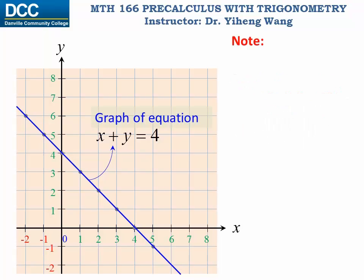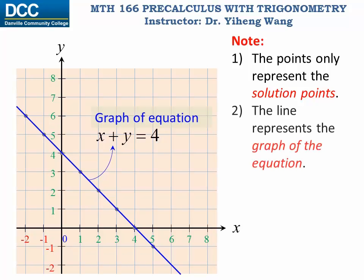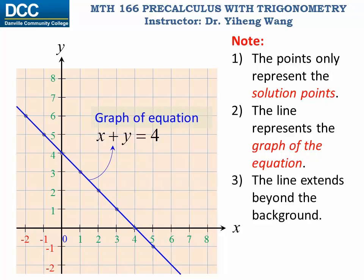You might find this very simple, but still there are several notes I must stress. The points that we first plotted only represent a couple of specific solution points to the equation. They don't represent the graph of the equation. It is the line that represents the graph of the equation. As we discussed, there are unlimited numbers of solution points to this equation, and the line segment that you see here is only a part of the graph. You should imagine that the actual graph extends way beyond the background.